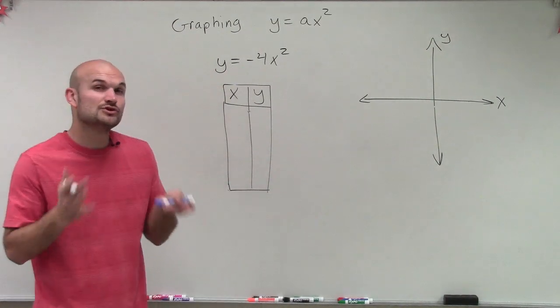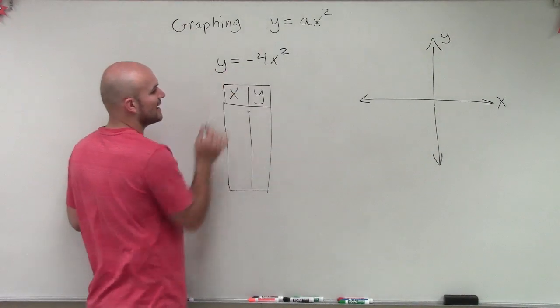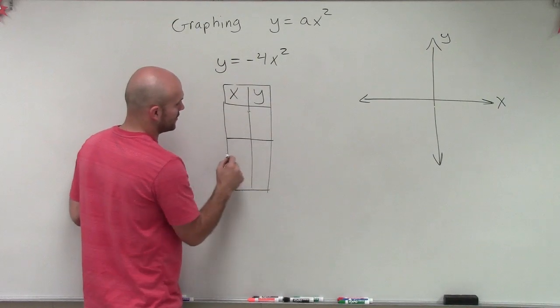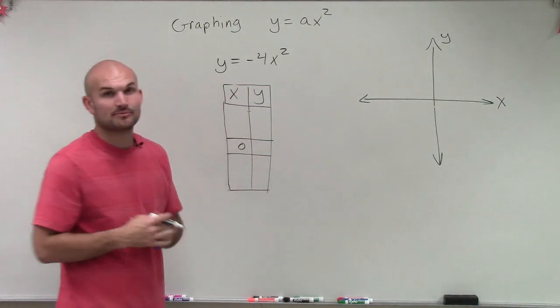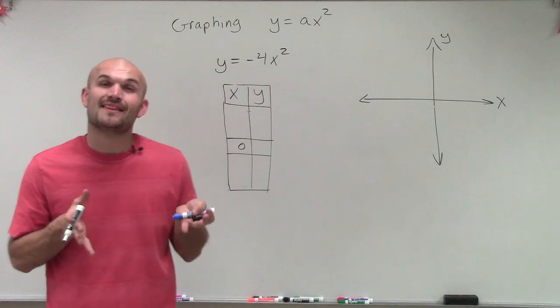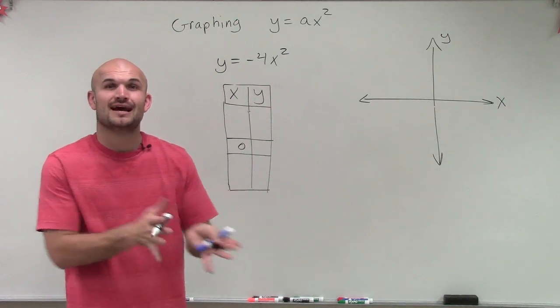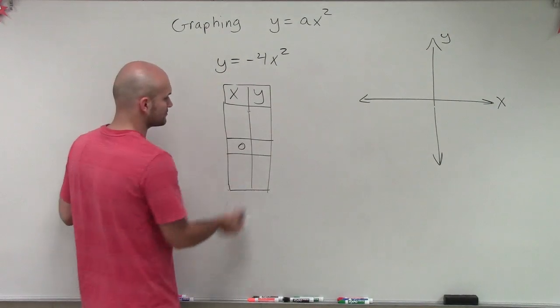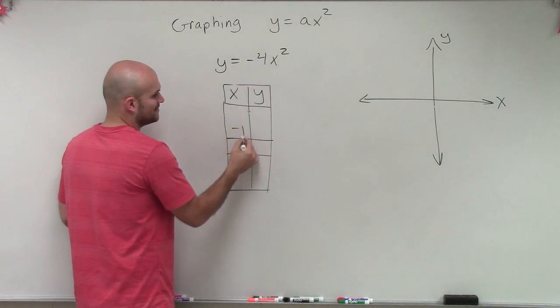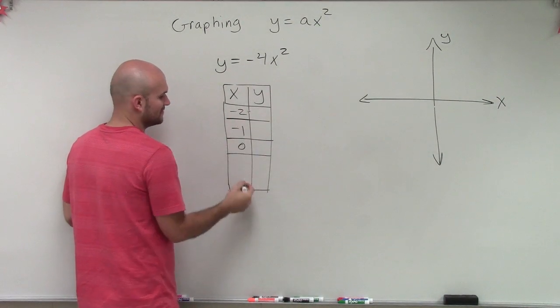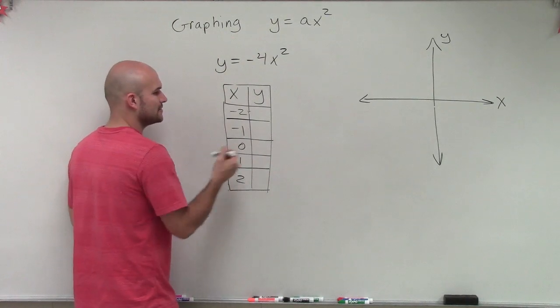But now what we can do is we can choose our points. And since I said the axis of symmetry is at zero, that's going to be the first point I'm going to choose for my x. Then, from that axis of symmetry, I'm going to choose two points to the left and two points to the right. So the points I'll pick, I'll keep this easy. I'll use negative 1, negative 2, and then I'll use positive 1 and positive 2.